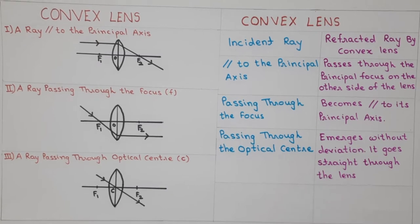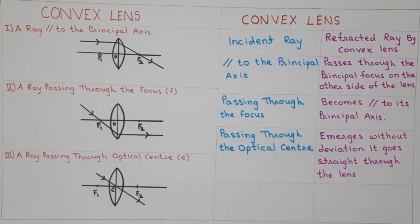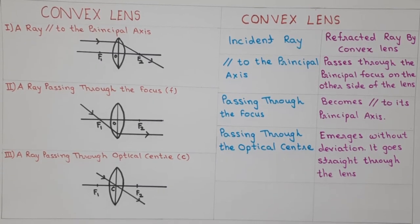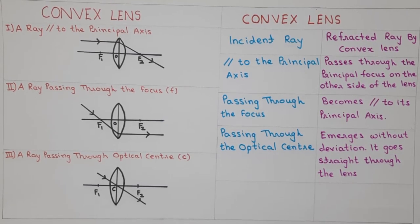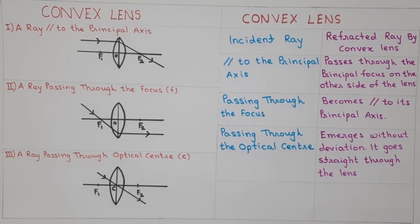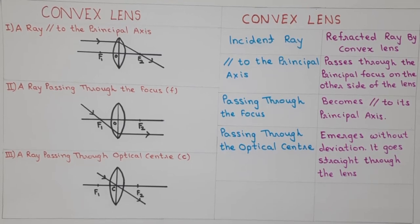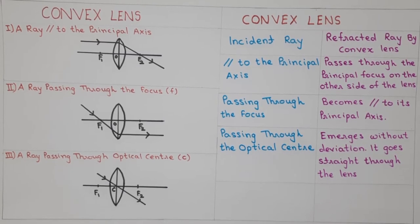We will use these ray diagrams for finding the position and nature of images formed by the convex lenses. The image formed by a convex lens depends on the position of the object in front of the lens. Let's see the image formation by convex lenses.